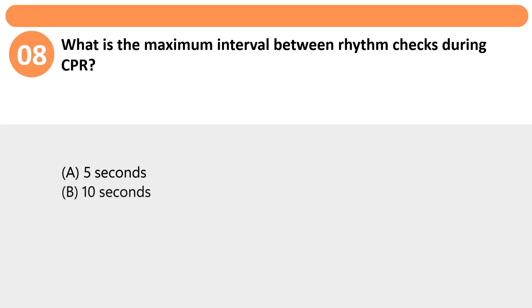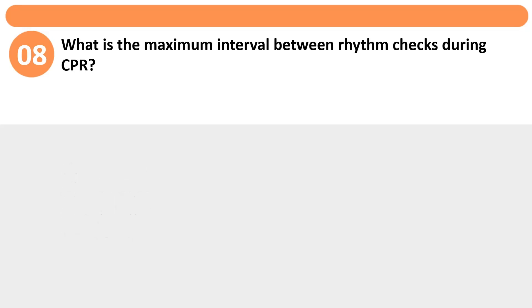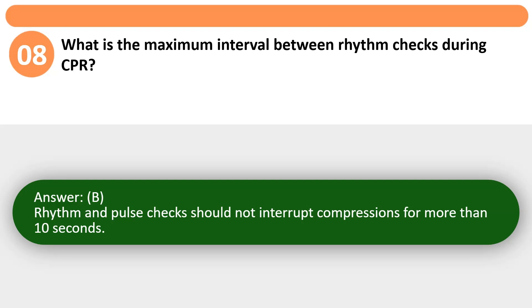What is the maximum interval between rhythm checks during CPR? A. 5 seconds. B. 10 seconds. C. 15 seconds. D. 20 seconds. Answer: B. Rhythm and pulse checks should not interrupt compressions for more than 10 seconds.